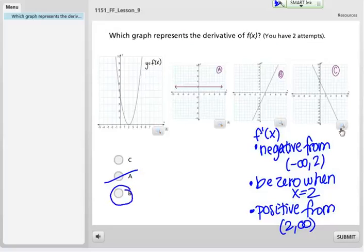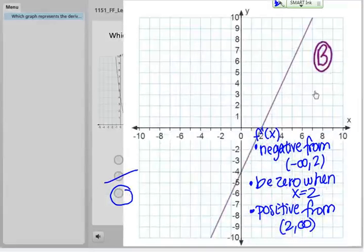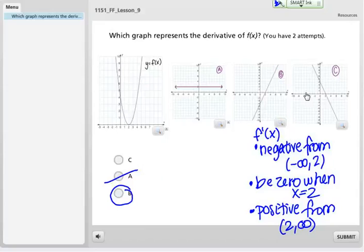We can briefly look at choice C. The thing that's wrong with choice C is that it actually starts out positive and then goes negative. But that's opposite of what we want. We want something that starts out negative and goes positive like we saw in choice B. So that's how you match up a graph to its derivative.